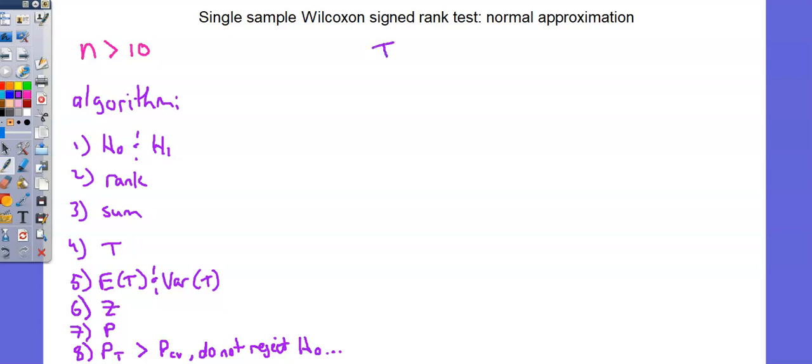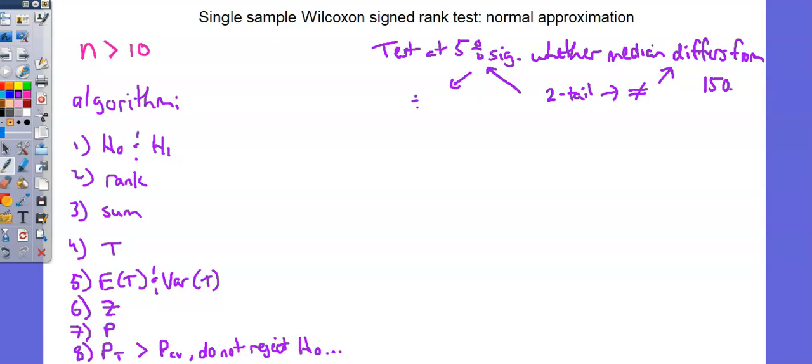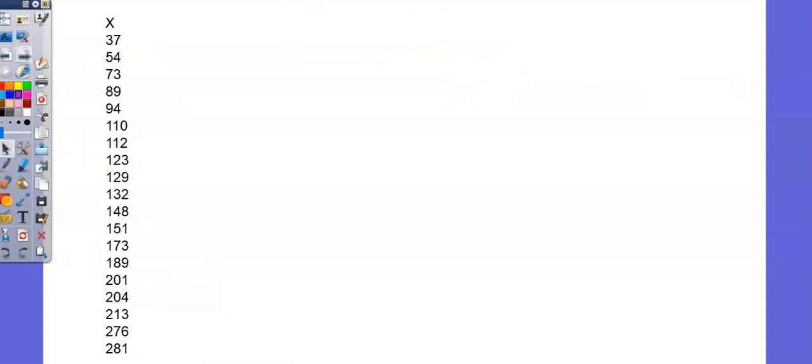Our requirement is test at 5% significance level whether median differs from 150. Differs from indicates not equal to, and not equal to indicates two tail, which means we're going to look at the 5% significance and cut that in half to get 0.025, which we'll use towards the end of our procedure. I'll bring over my data on the next slide because we have a relatively large data set here, 19 measurements.